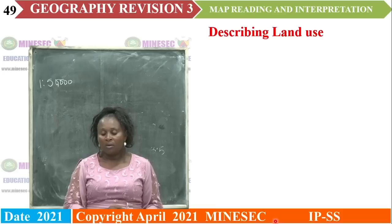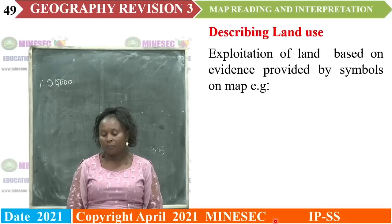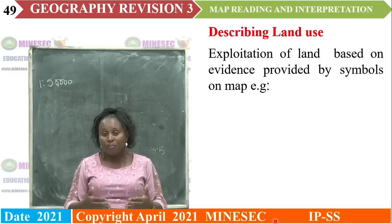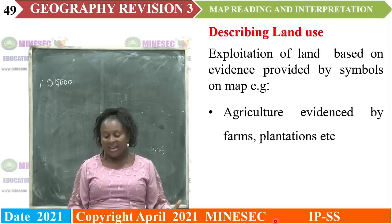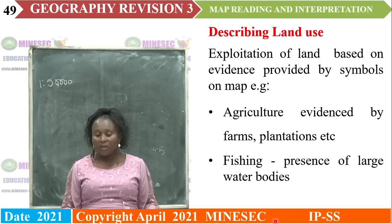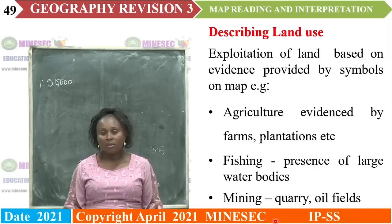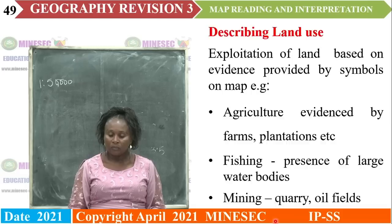Land use — what the land has been used for, the exploitation of the land based on evidence. Students are usually asked with map evidence to state or identify land uses. Which are the land uses? We have agricultural land use, evidenced by farms, plantations, orchards. Fishing is a land use, evidenced by the presence of rivers. Mining is a land use, evidenced by quarrying. Those are the elements required for you to answer a question in map work.